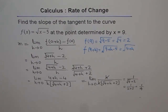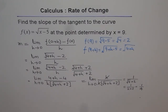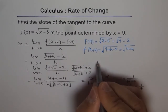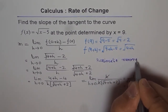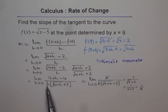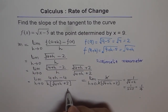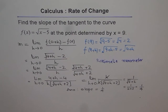So the slope of the tangent to the curve f(x) is 1/4. We used rationalization — specifically, rationalizing the numerator. Always rationalize when you have a square root, then cancel h and substitute to get the slope. The answer is slope = 1/4. Thanks and all the best.